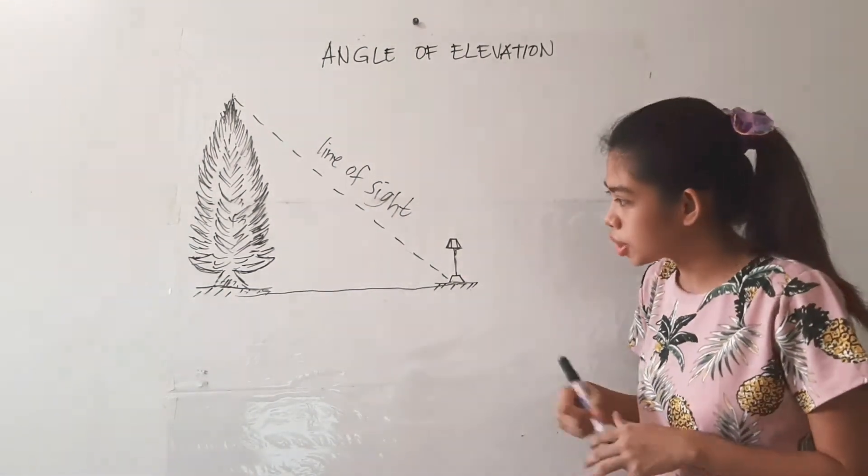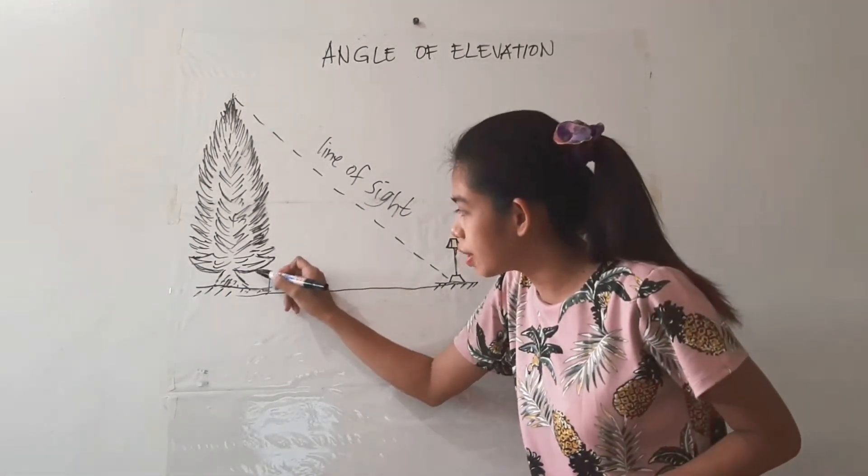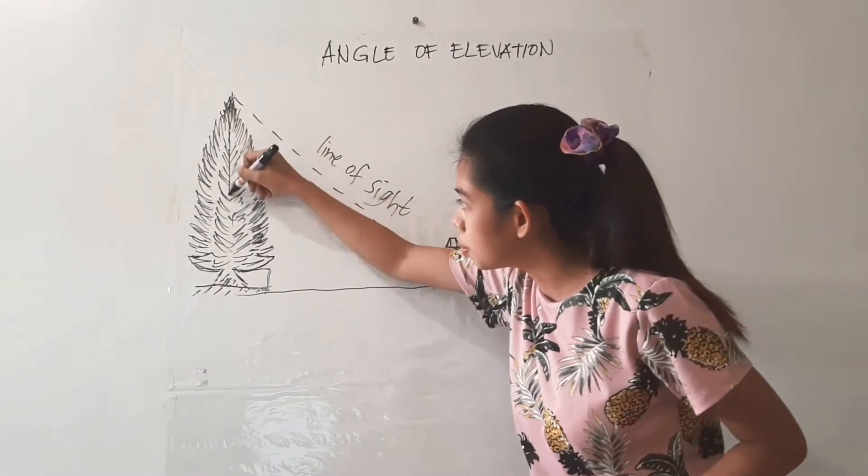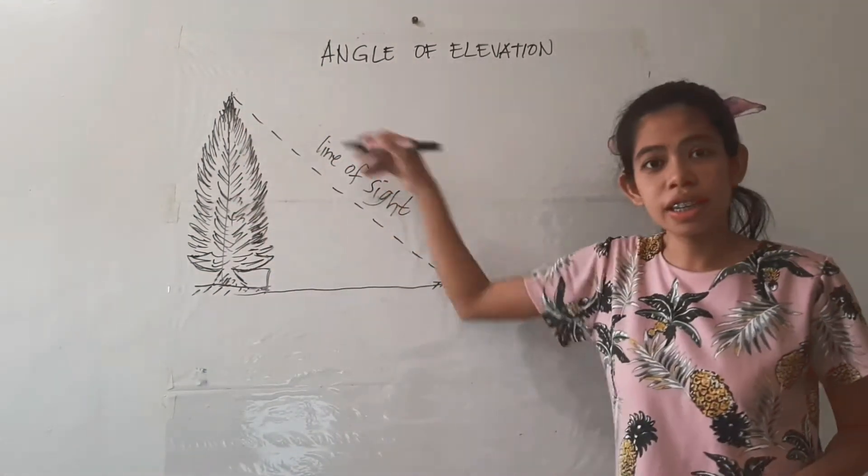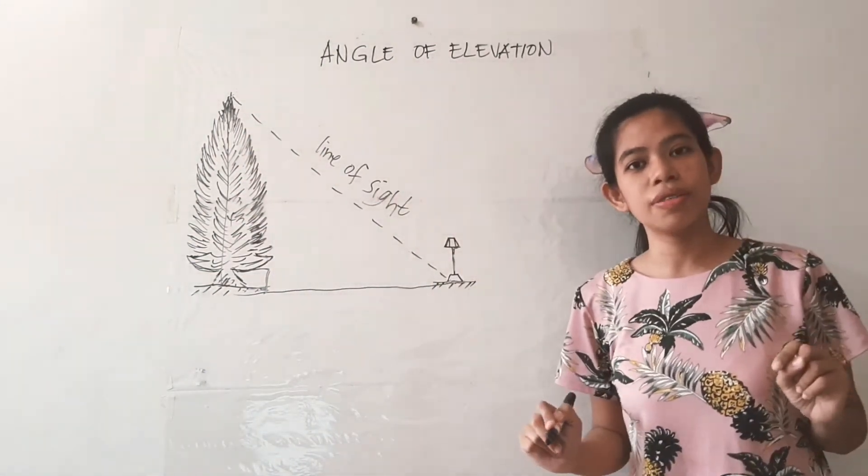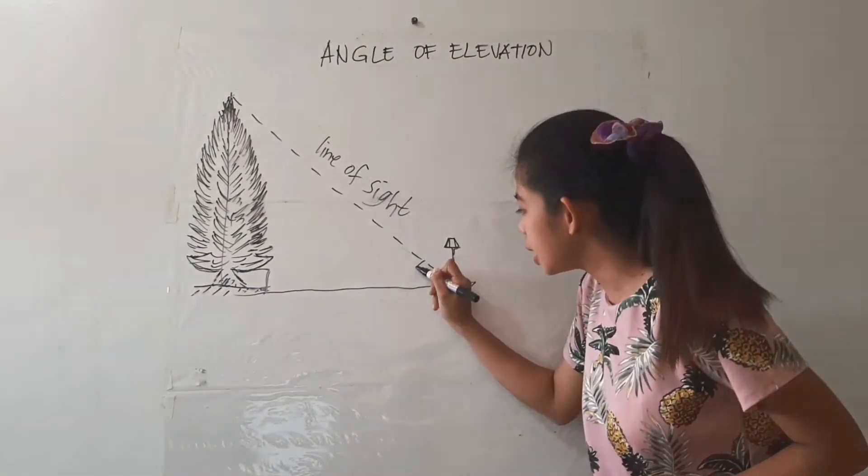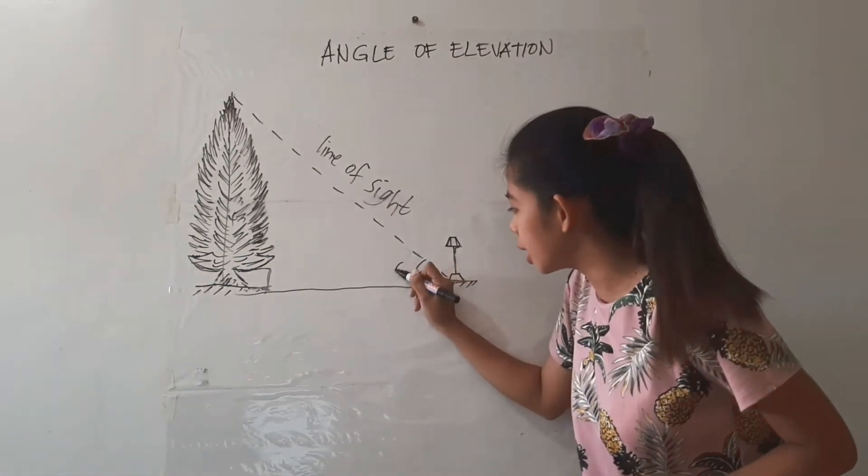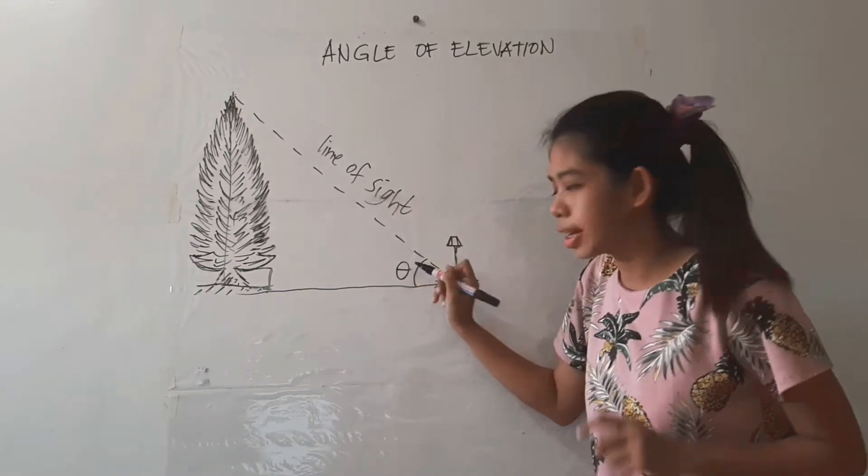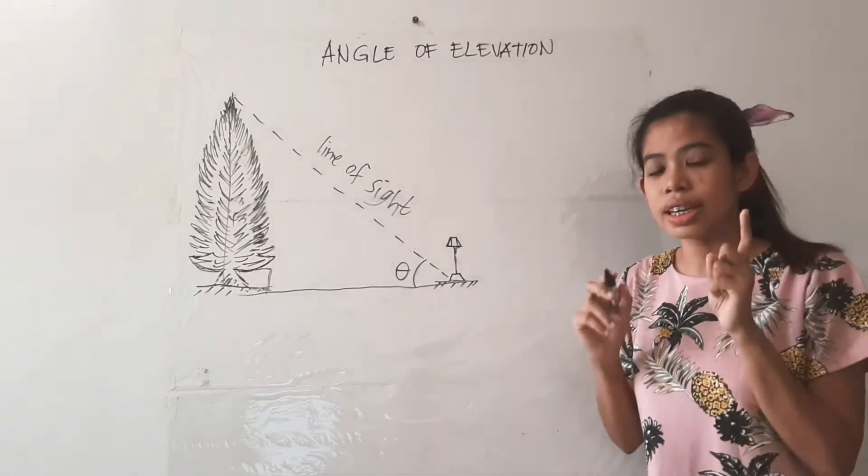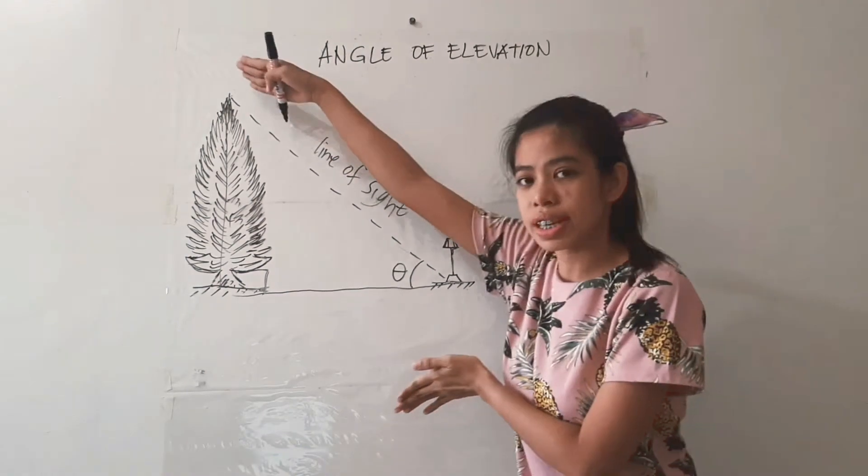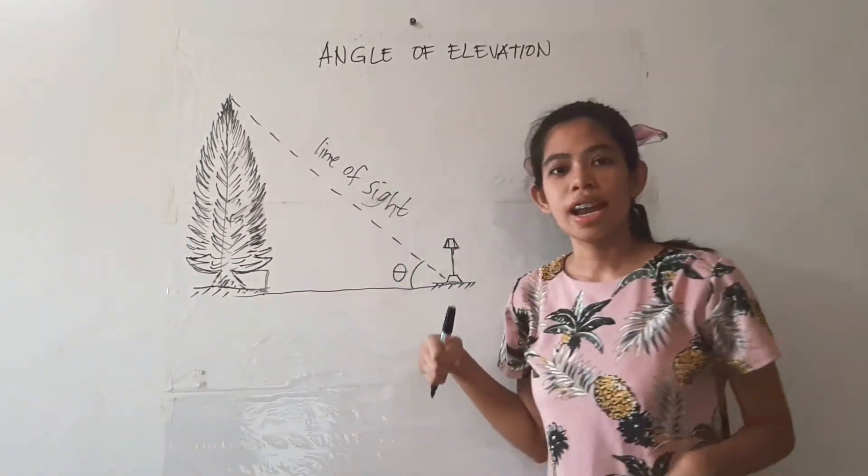And now as you have noticed here, we have created a right angle. So definitely, we created a right triangle here. So where is the angle of elevation? It is found here inside the triangle. So again, angle of elevation is the angle formed between the line of sight and the horizontal line.